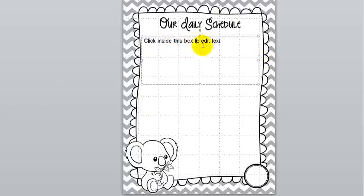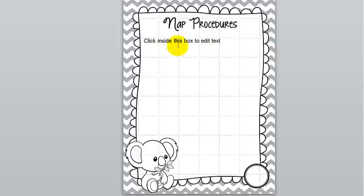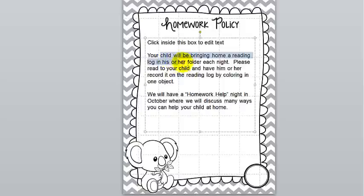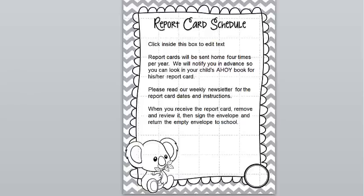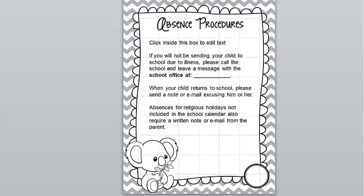Add your daily schedule in there. If you have rest time, click in the box and add that information — if you don't have rest time, there's no need to use that page. Same for nap. I usually include attendance and tardy policies. If you have homework, there's a homework policy. You can click inside to personalize it. There's information for weekly folders, report cards, parent conferences, and your grading policy if you have one. Procedures for being absent are very important in early childhood because kids get sick a lot.